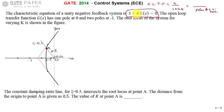As K changes, the pole locations change. The root locus shows the variation of closed-loop poles of a given open-loop system with unity feedback as K varies. Any point s on the root locus satisfies the characteristic equation, because closed-loop poles are defined by that equation.